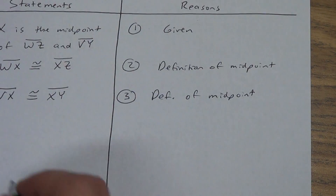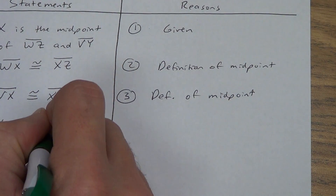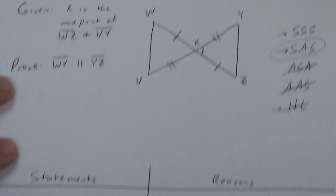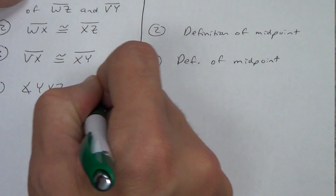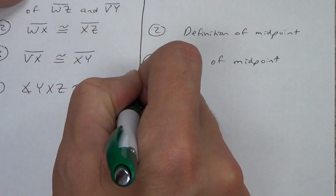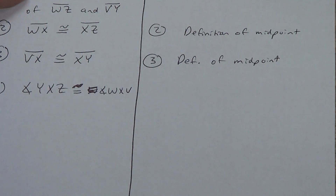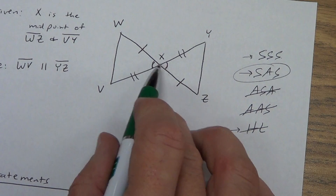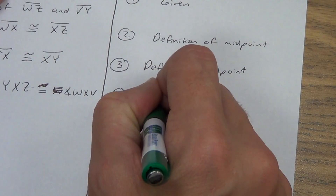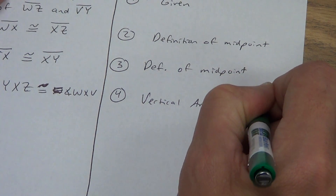Do I have a good reason to say angle YXZ is congruent to angle WXV? Yes. So let's write it down: angle YXZ is congruent to angle WXV. Right across from each other where these two lines meet — it's the vertical angle theorem. If you don't know your vertical angle theorem, you are going to struggle a lot. That was an angle, so I put A for angle.